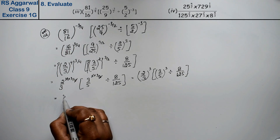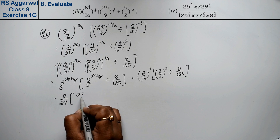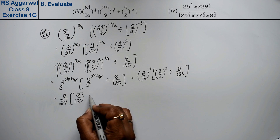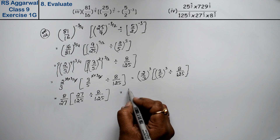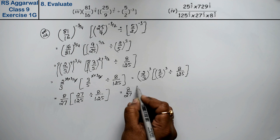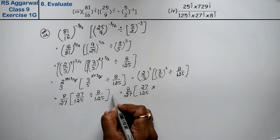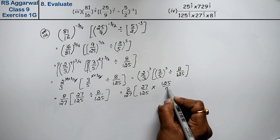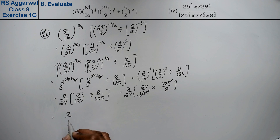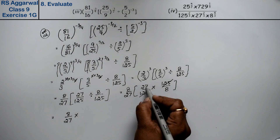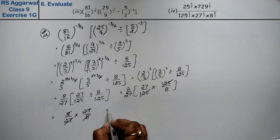Now, 2 upon 3 to the power 3 means 8 upon 27. And 3 upon 5 to the power 3 means 27 upon 125. So we have 27 upon 125, divided by 8 upon 125. When dividing, the sign changes to multiply and the fraction flips — the lower value goes up and the upper value goes down. So 125 and 125 cancel, giving us 27 upon 8, multiplied by 8 upon 27, which equals 1. The answer is 1.